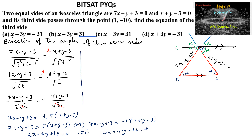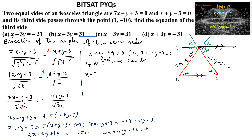So we get two line equations. Taking 2 as common: x minus 3y plus 9 is equal to 0. Taking 4 as common: 3x plus y minus 3 is equal to 0. Since we require a line parallel to one of these, the equation of the third side can be written as x minus 3y plus k1 is equal to 0, or 3x plus y plus k2 is equal to 0.